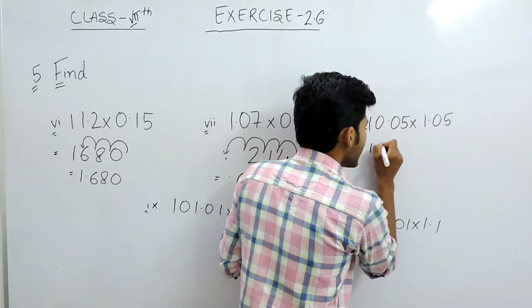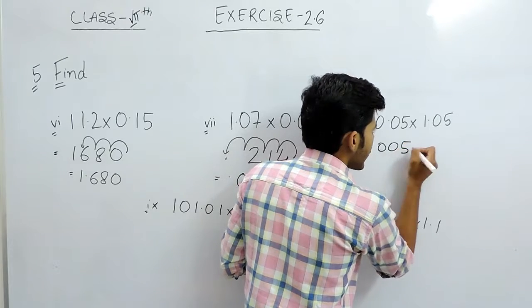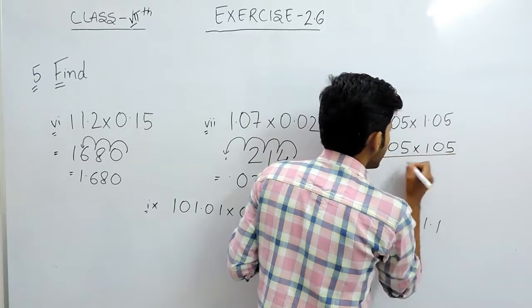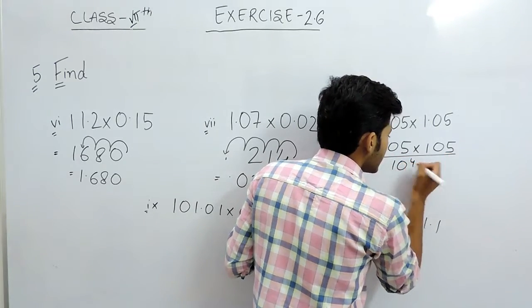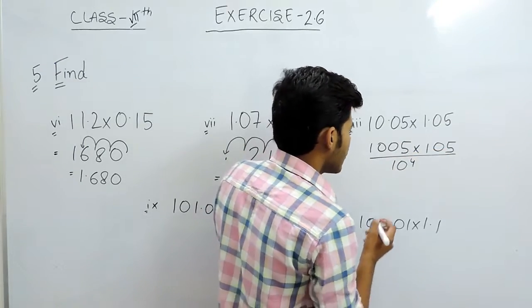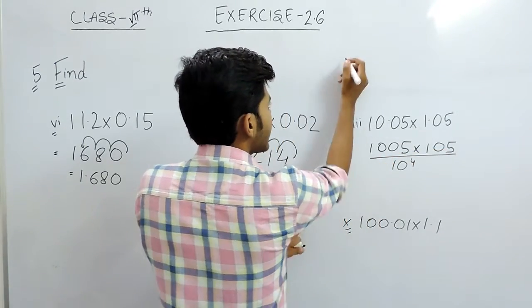Now in this one, we can write this as 1005 multiplied with 105 divided by 10 to the power 4. Now the simplest way is that we write this as, I am writing it here,